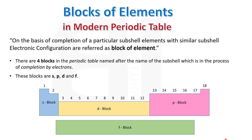You can observe in the diagram that S block consists of 2 groups — group number 1 and 2. One more interesting thing about the S subshell is that S subshell can accommodate 2 electrons, and S block also has only 2 groups.